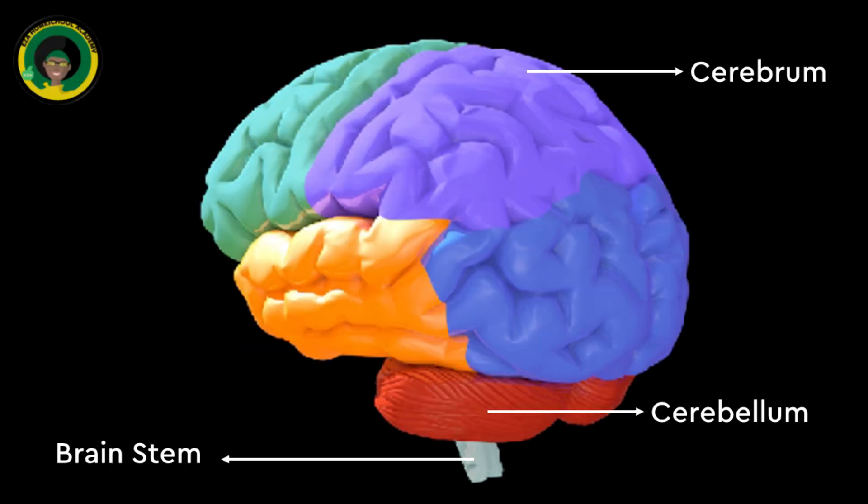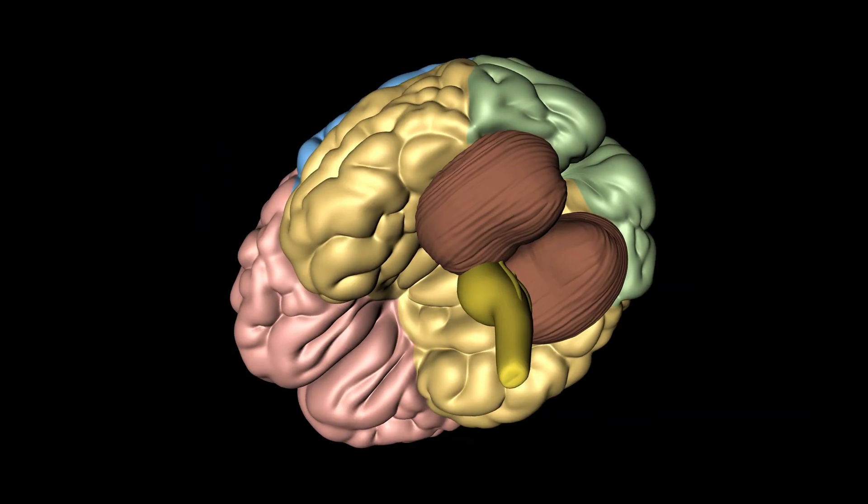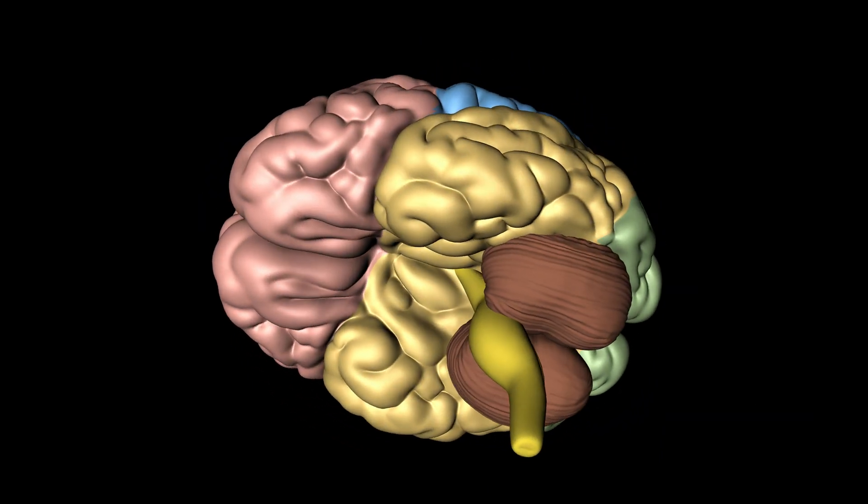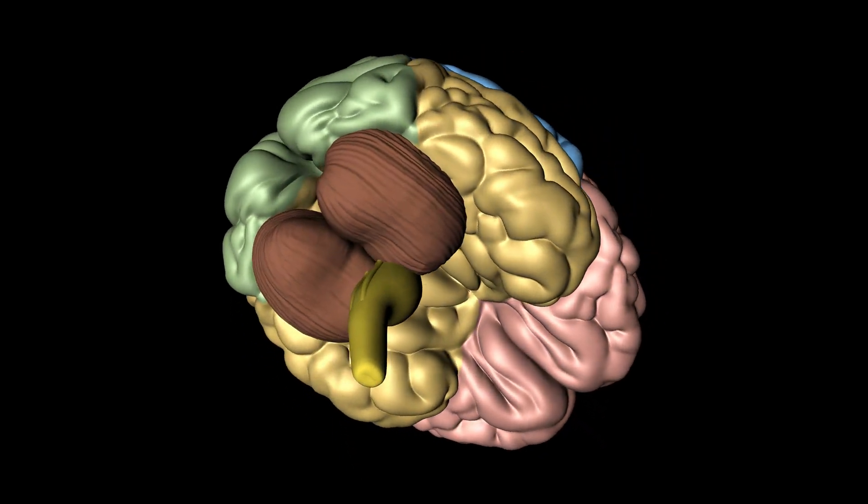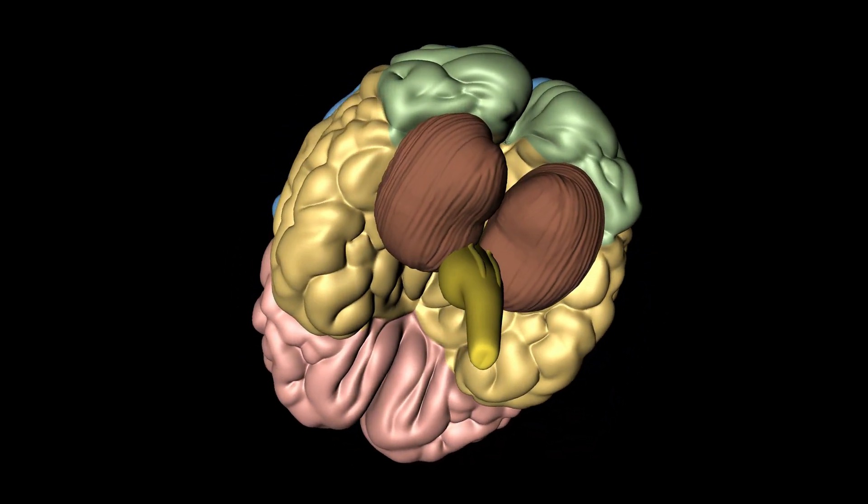Brainstem. Connects the brain to the spinal cord and controls vital functions such as breathing, heart rate and blood pressure. It includes the midbrain, pons and medulla oblongata.